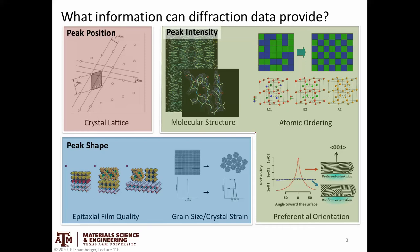As a quick refresher: X-ray diffraction data can give us a lot of different information about different aspects of the material. There are peak positions, which tell us generally something about the lattice itself. There are peak intensities, which are related to which atoms are sitting where within the unit cell, but also to things like preferential orientation. And then there are shape effects — peak shape is dominated by your diffractometer itself, but also by things like epitaxial film quality, residual strain, or small grain size.